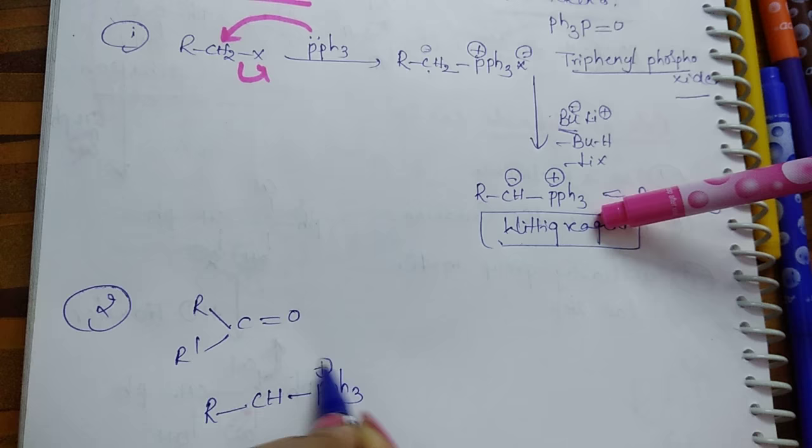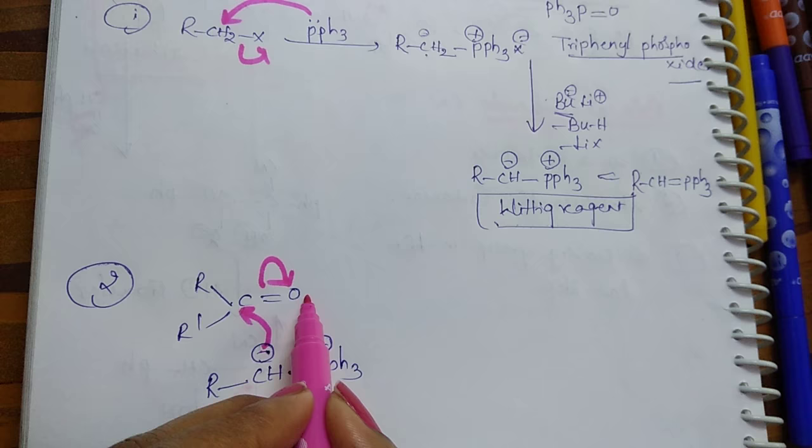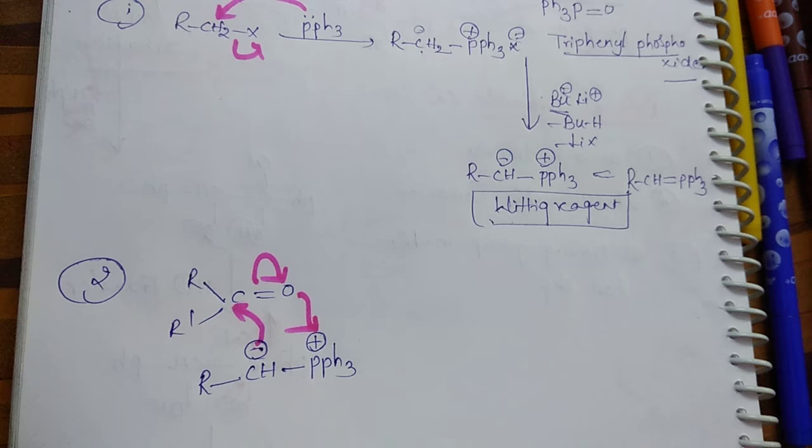This Wittig reagent donates this electron density to this carbon. Then, shifting of electrons takes place in such a way, and this oxygen in turn donates its electron density to this triphenyl phosphine group. It results in...